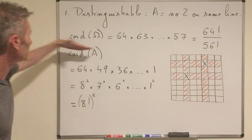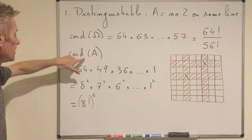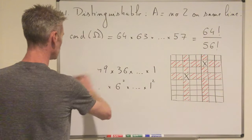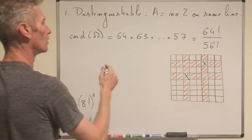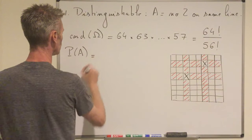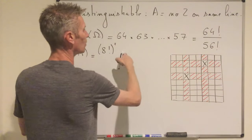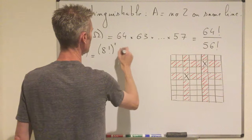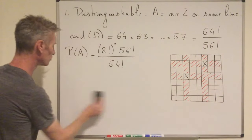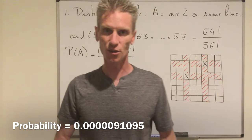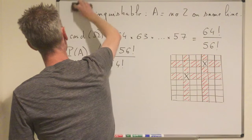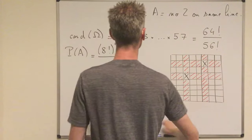From that, we can deduce the probability of A. The probability of A is equal to (8!)² times 56! divided by 64!. If you use a calculator to compute this quantity, you would find a very small probability. So now let's move on to case 2, where the rooks are assumed to be identical.